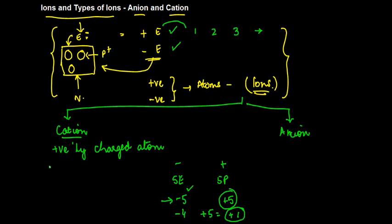So in case of cation, what it is, is that when you remove an electron from an atom, then basically this ion which is left is called a positively charged atom or cation.